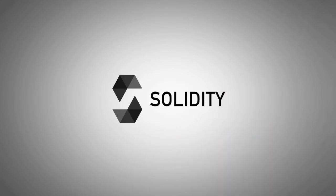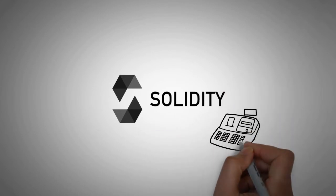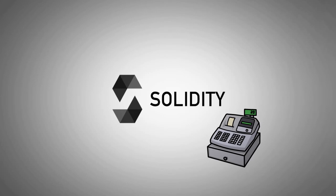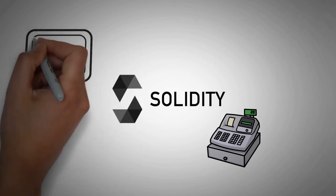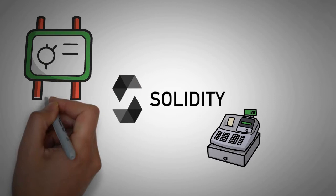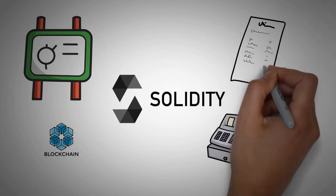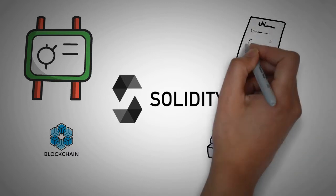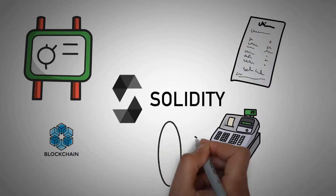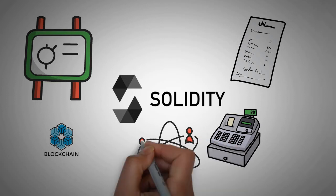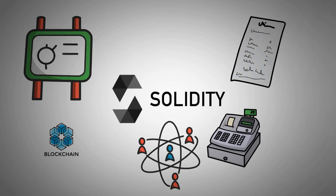Solidity is a high-level language designed to target the Ethereum Virtual Machine, or EVM. The EVM is simply a piece of software that helps to determine the state of every block in the Ethereum blockchain. This means that if a block of transactions is carried out, the EVM will know about it and can tell everyone else on the network what happened. It achieves this by computing the state of the Ethereum network after each block of transactions is added.